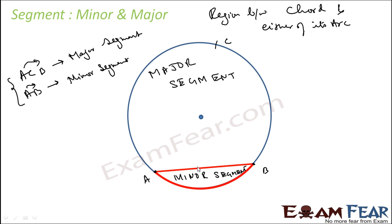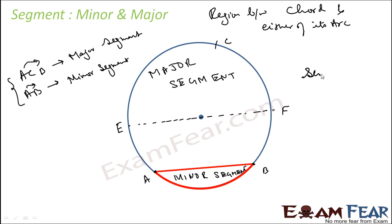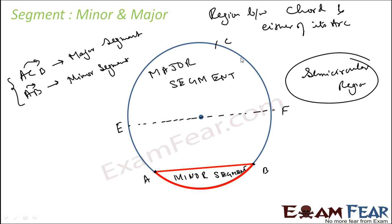In the case where the two points are endpoints of a diameter, each arc is a semicircle and both segments are called semi-circular regions. Note that when the arc is a semicircle, the sector and segment are the same region, because the chord (diameter) passes through the center. So major arc and minor arc terminology doesn't apply — we just have semi-circular region.